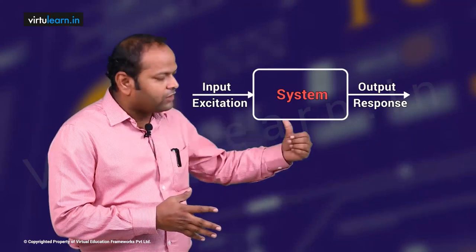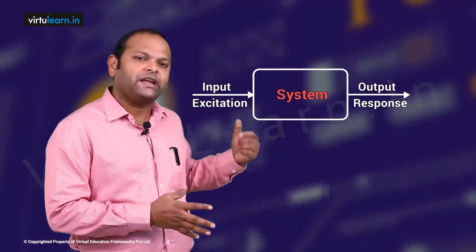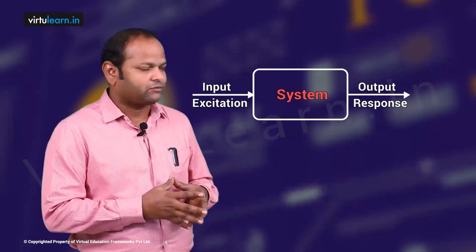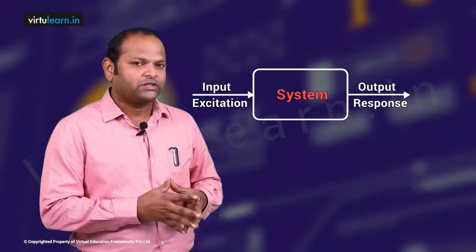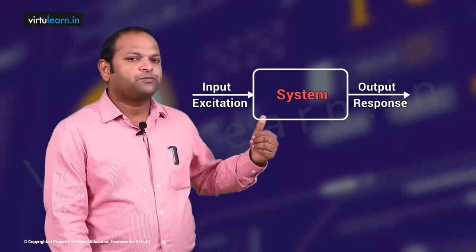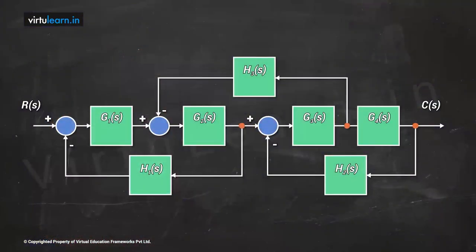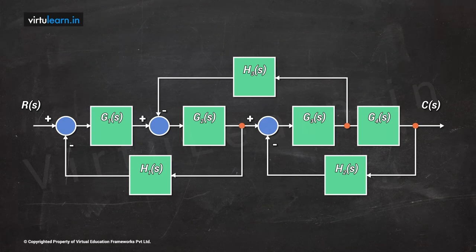In the control point of view, we give input to the system — sometimes called the excitation — and the output of the system is called the response. A system is also composed of several subsystems. Looking at this diagram, there are many blocks: g1, g2, g3, and feedback paths h1, h2, h3. All these are subsystems, and combined they form the system.